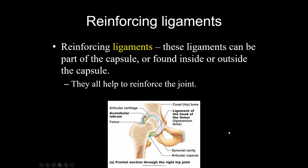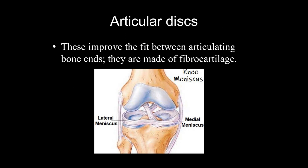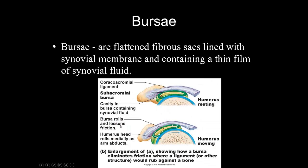Reinforcing ligaments do exactly what the name says. Articular discs are the same thing as menisci (meniscus is singular) — we'll talk about those more when we get to the knee joint. Bursa is sort of like fluid-filled bubble wrap — it can protect tendons and ligaments so they don't rub directly against bone or cartilage. The person in that video had an inflamed bursa, so they were sucking some fluid out of one of those little sacs. Tendon sheaths are the same thing but long and wrapped around a tendon.